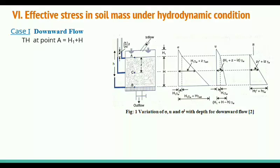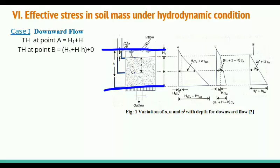Total head at point A — as you already know, the total head at any point is the summation of elevation head and pressure head. At point A, with datum taken as point B, the elevation head is H and pressure head is H1. So we can write total head as H1 plus H. Similarly, we can write total head at point B.